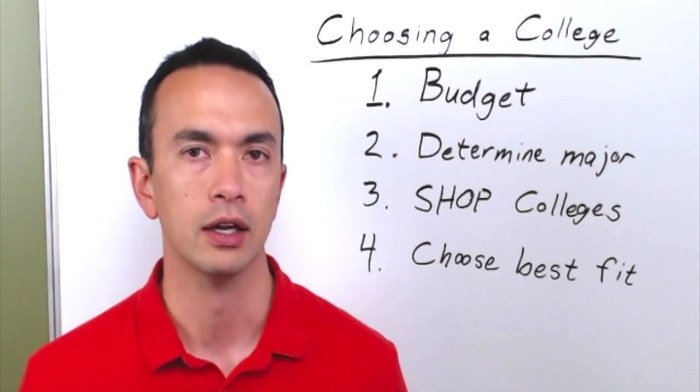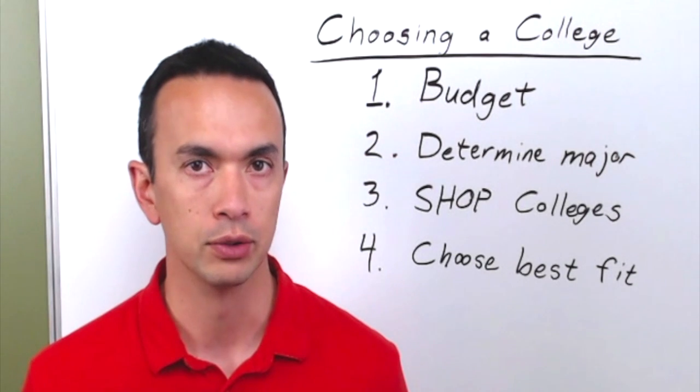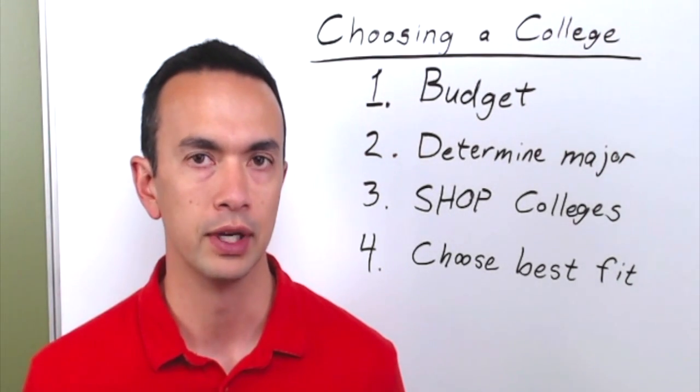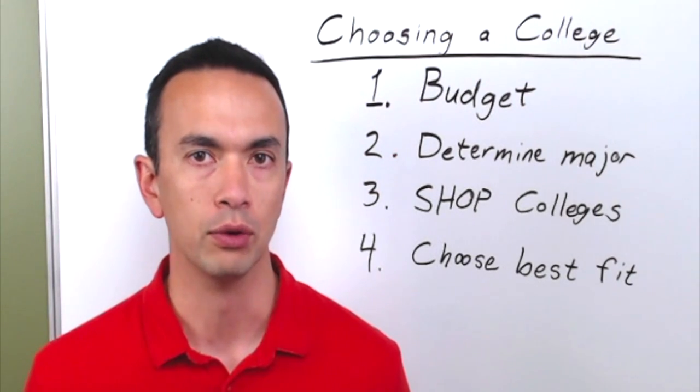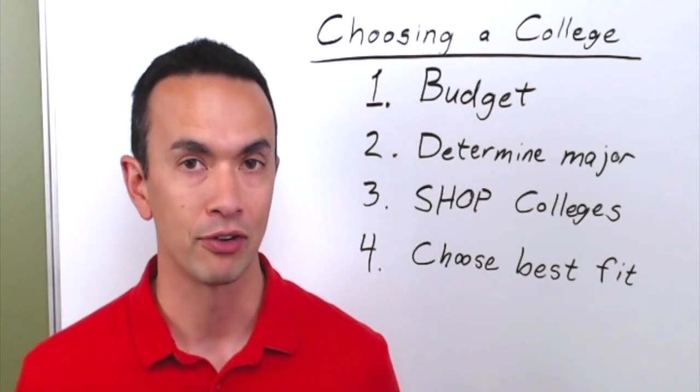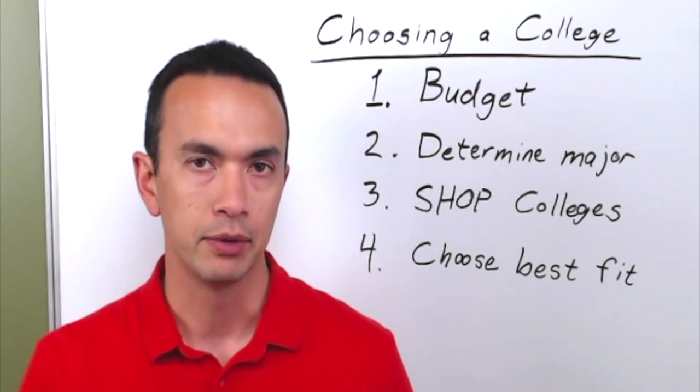A rule of thumb that I like to use is that you don't want to take out more student loan debt than what your expected starting salary is going to be. The next step is shopping around, and I mean more than just looking at the sticker price of college. Figure out what the all-in cost is going to be.